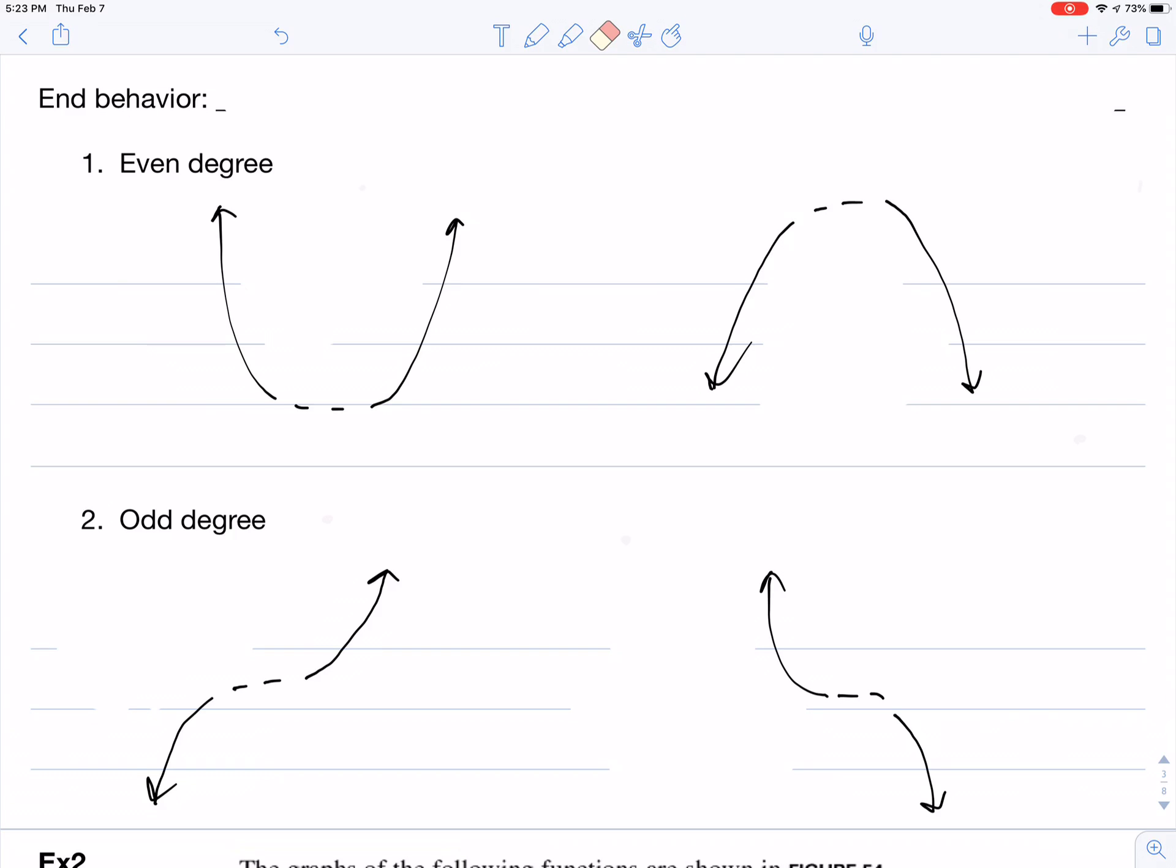So what exactly is end behavior? End behavior is what's happening on the graph way out on the ends, way out on the left end at negative infinity, or way out on the right end at positive infinity.